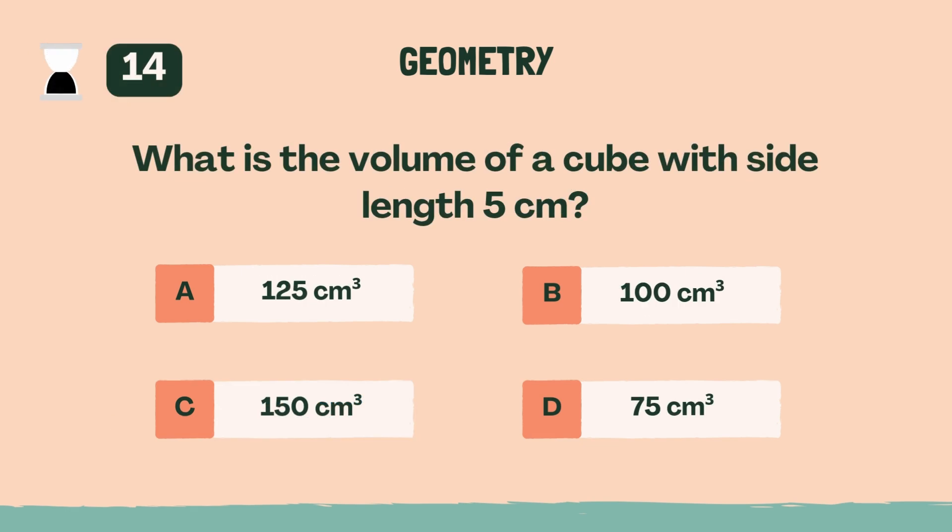What is the volume of a cube with side length 5 centimeters? A, 125 cubic centimeters.